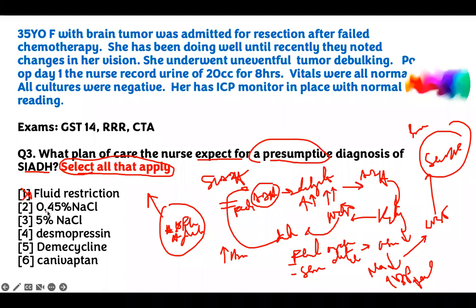This is where they confuse you with 0.45% normal saline. You don't want to give any fluid that is less than 0.9% normal saline. If you give 0.45% half-normal saline, you're diluting the sodium again — that's the trick question. They say 0.45% normal saline and you think you're giving salt, but it's diluted salt and it will make the sodium go lower. So fluid restriction is correct, and 0.45% NS is wrong. You restrict fluids because they're already holding on to fluid. You can give 3% to 5% sodium chloride — that's replacing sodium, so that's correct.